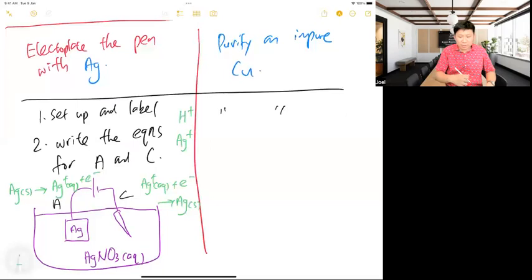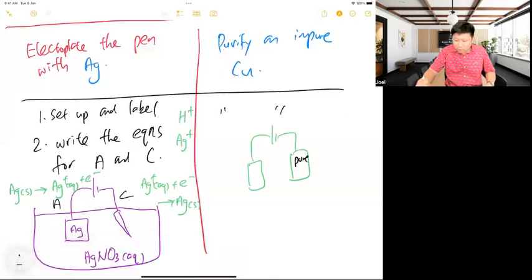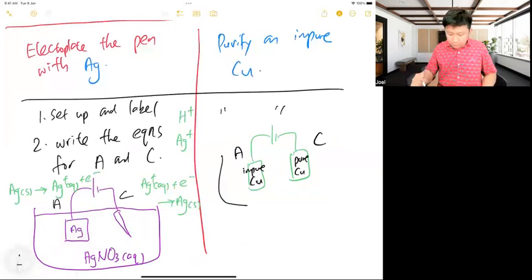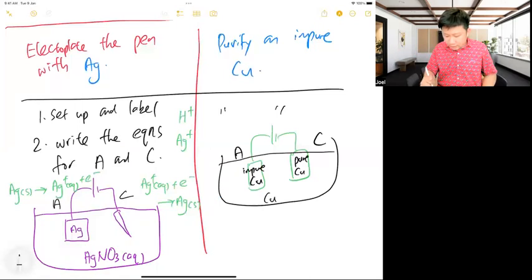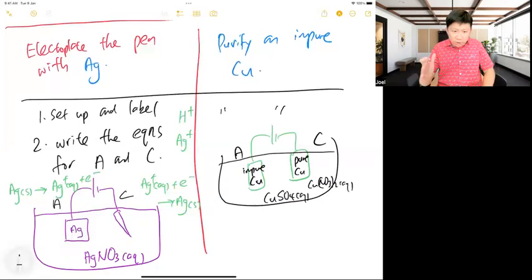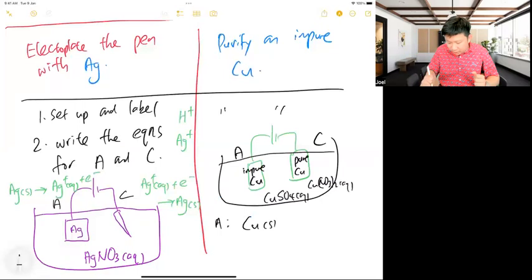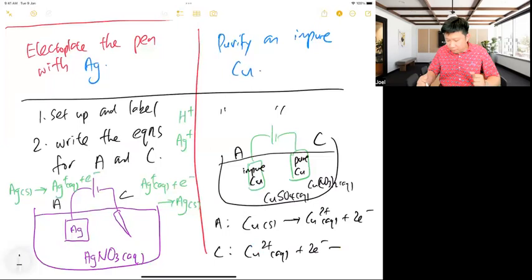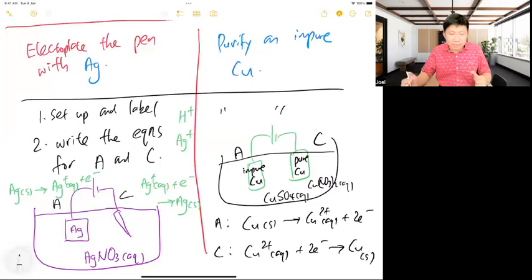For copper purification: pure copper must be at the cathode because that's where solids are formed. The impure copper goes at the anode. The electrolyte can be copper sulfate, copper nitrate, or copper chloride — any soluble copper(II) salt. The impure copper is the reactive electrode and will oxidize: Cu → Cu²⁺ + 2e⁻. At the cathode: Cu²⁺ + 2e⁻ → Cu.